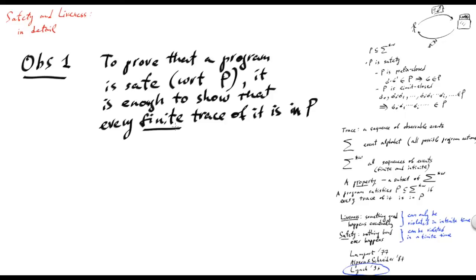Therefore, if we have an infinite trace of a program, each of its prefixes is also a trace of the program. And since the property we want to prove is limit-closed, once we prove that every finite trace of a program is in the property, then the limit of this sequence is also in the property.